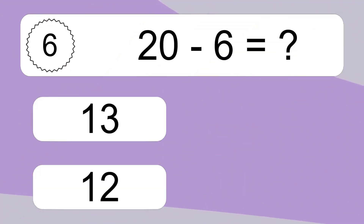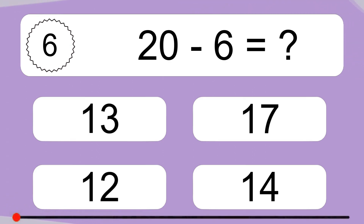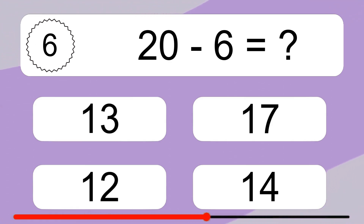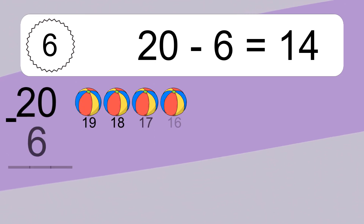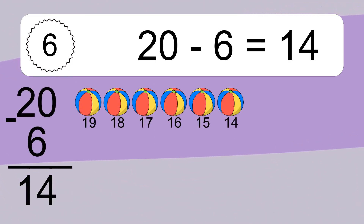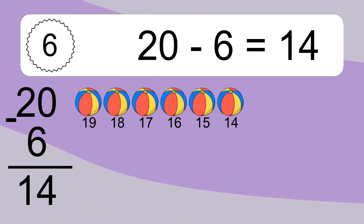20 minus 6 equals what? 20 minus 6 equals 14. Let's count it! 19, 18, 17, 16, 15, 14.